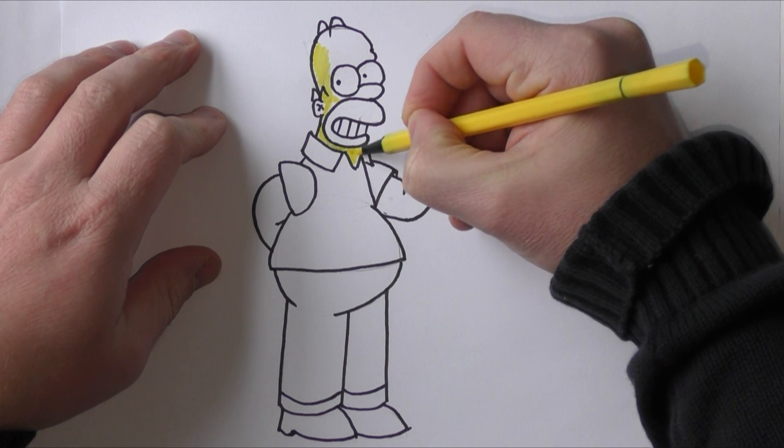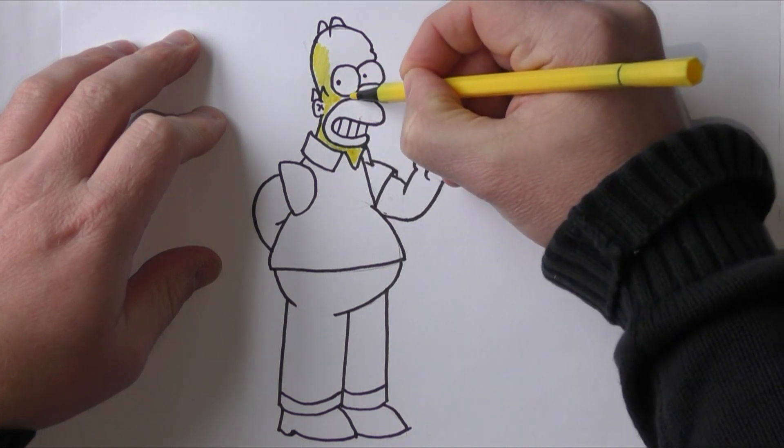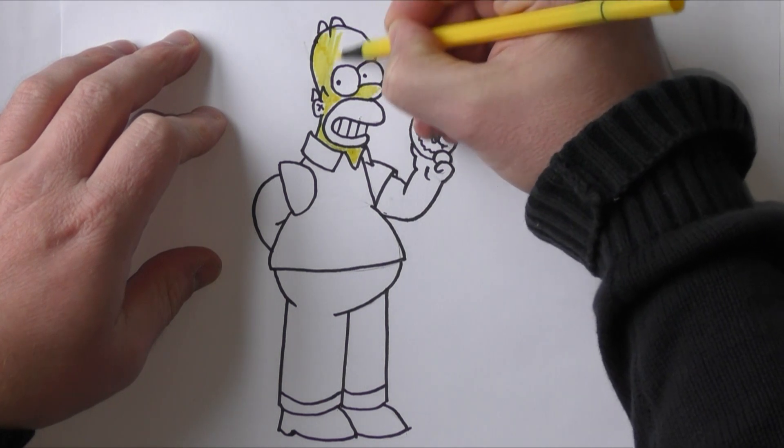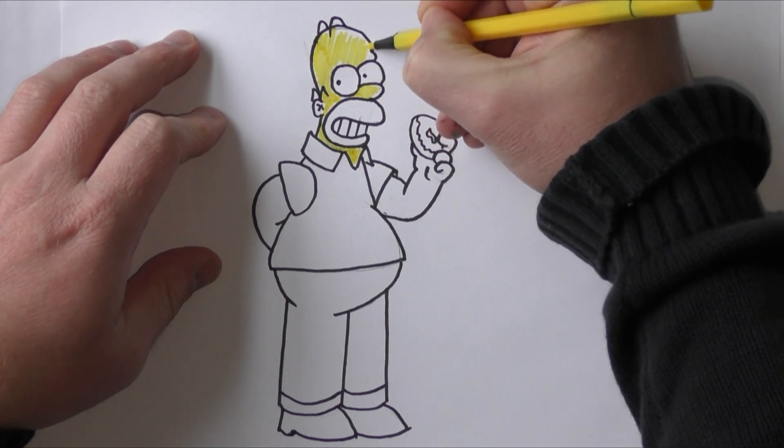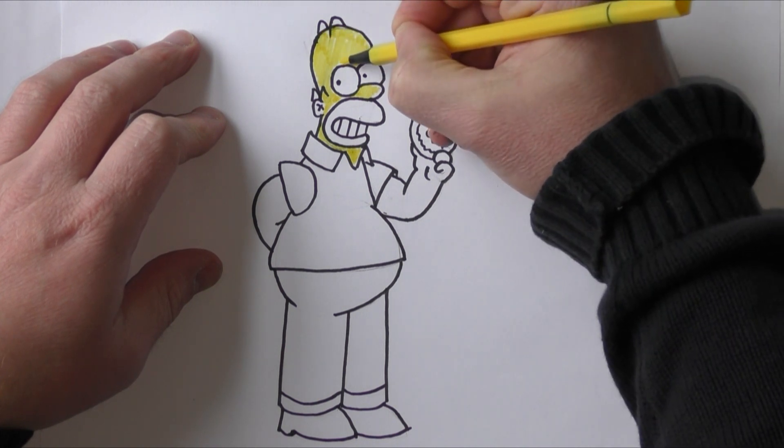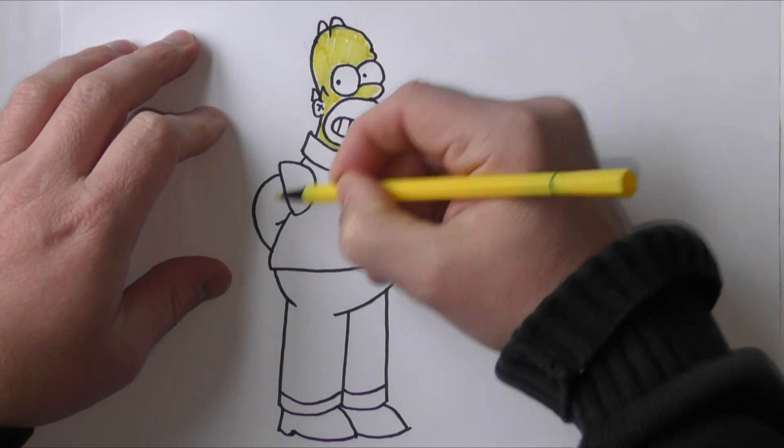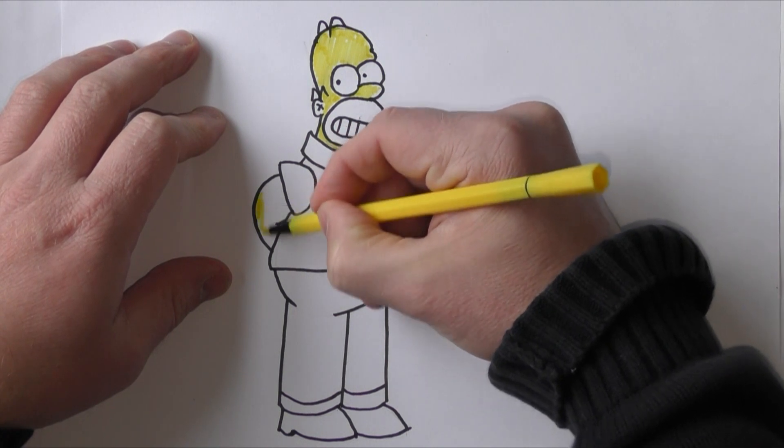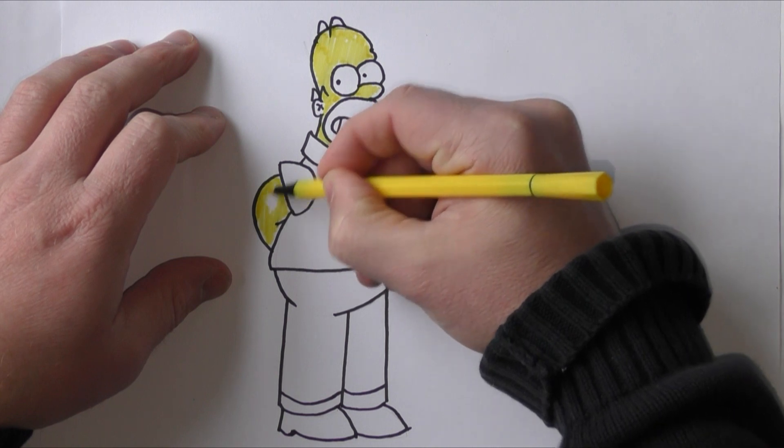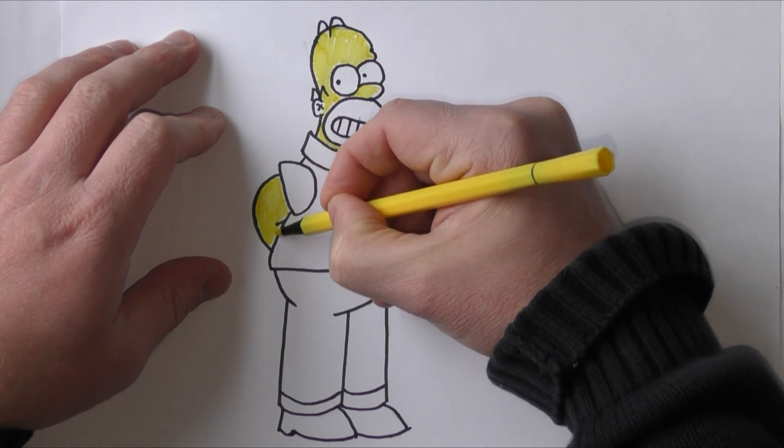There we go, make sure all the flesh you can see is all colored in yellow. So just doing his face first. Last bit and just a little bit around the top. That's it, and coloring his arm. There we go, and now for his other arm.